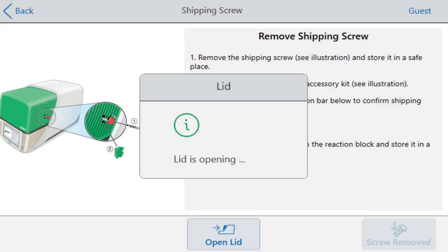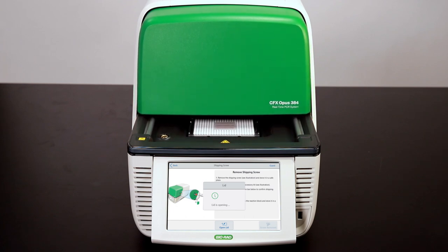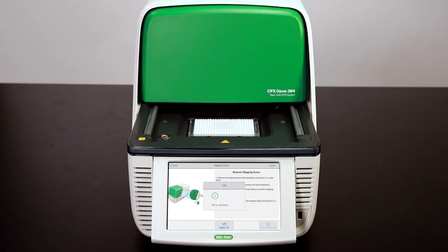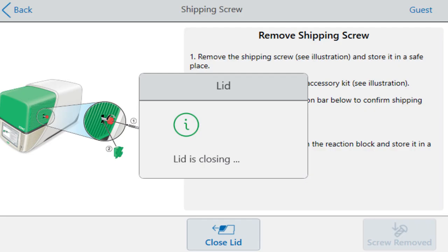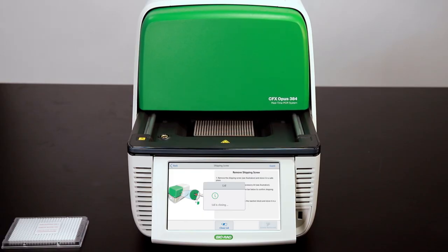To remove the shipping plate, press Open Lid and wait for the lid to fully retract. Remove the shipping plate and store it in a safe location. Press Close Lid and wait for the lid to close.